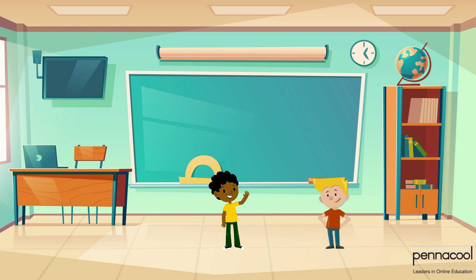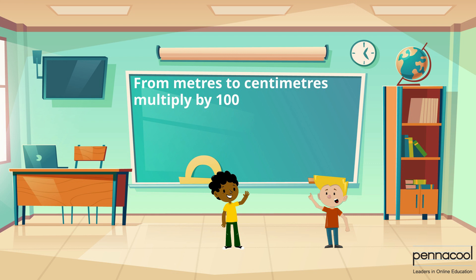Elijah wants to make things easy for Zion. He tells him when changing meters to centimeters to multiply by 100. If a rope is 3 meters long, what would its length be in centimeters? Zion follows his instructions and multiplies 3 by 100. He notes that the rope would be 300 centimeters in length.